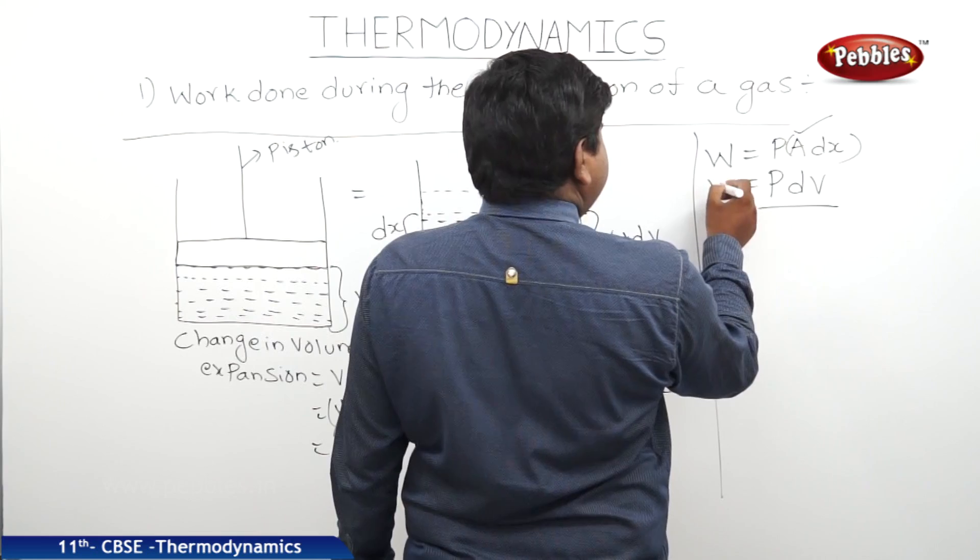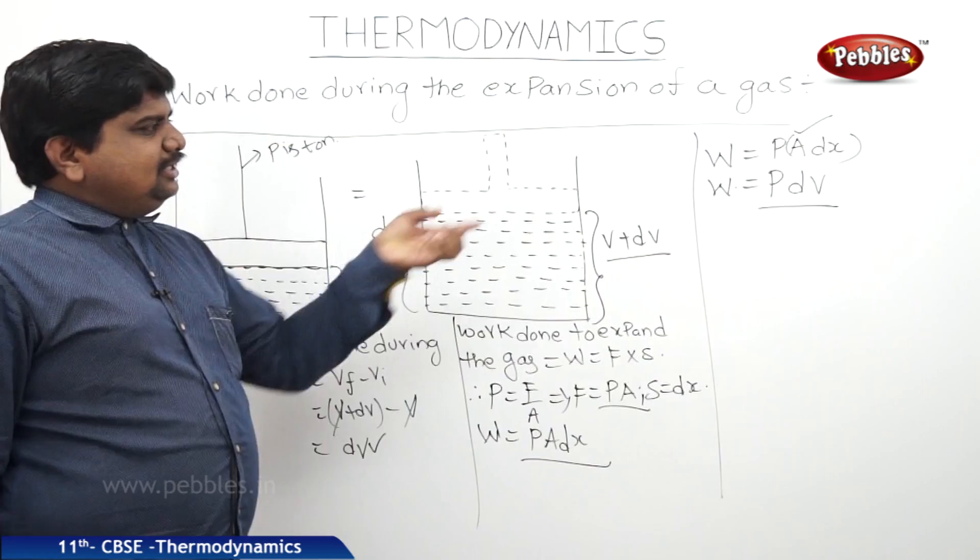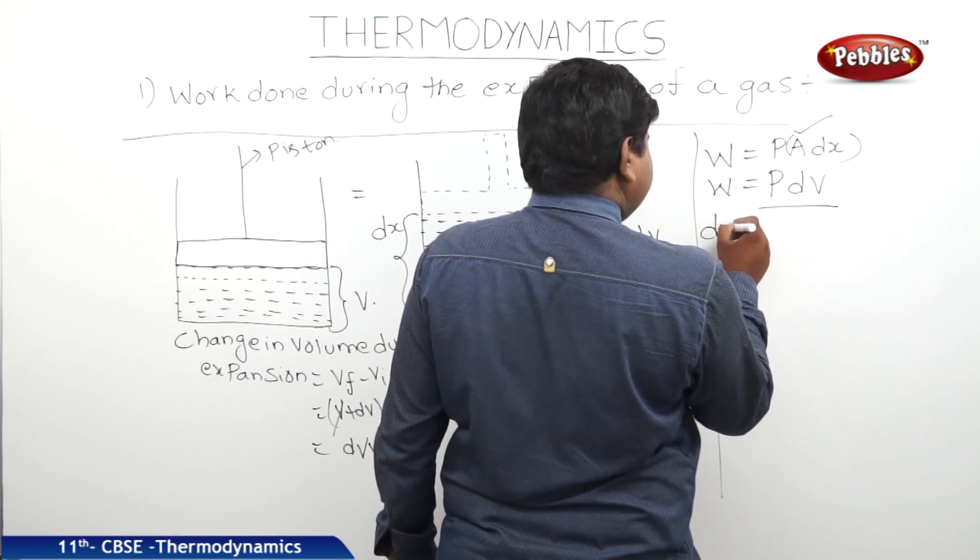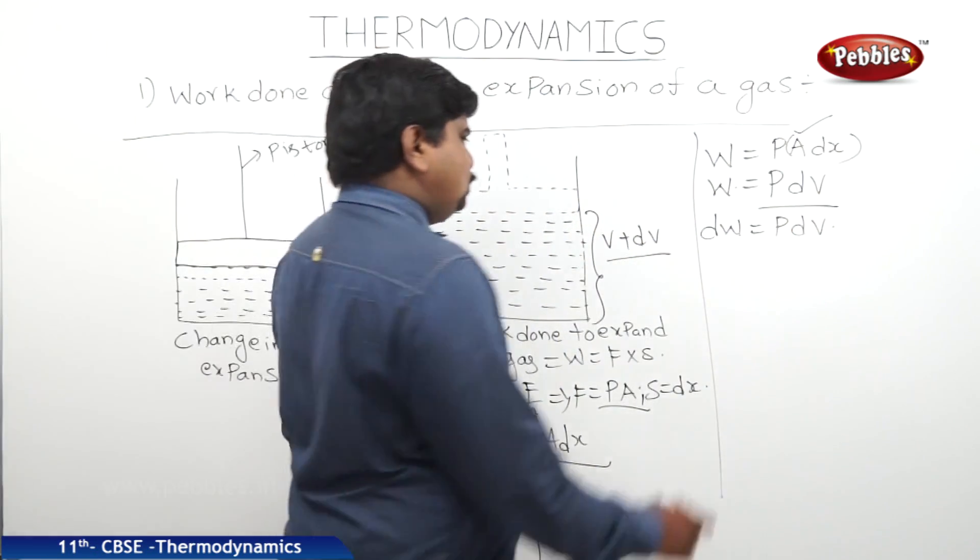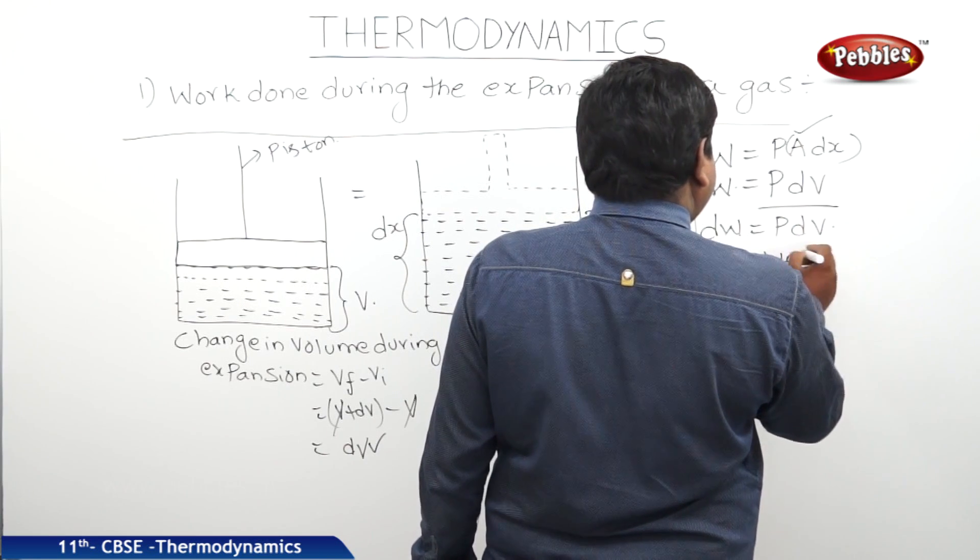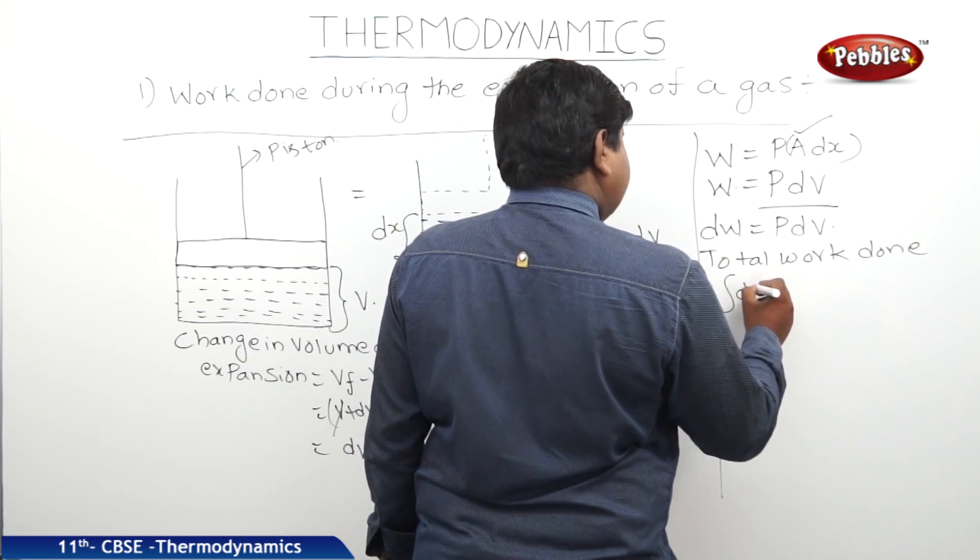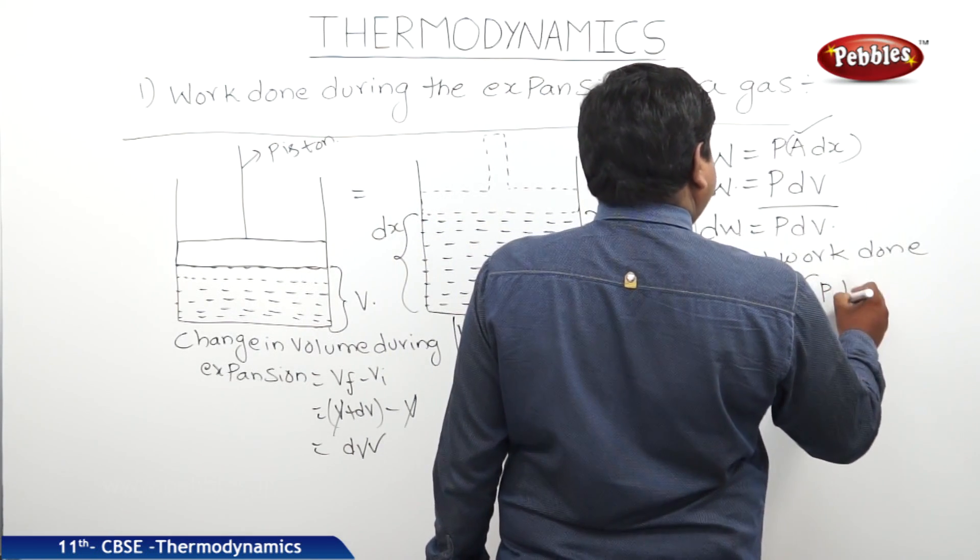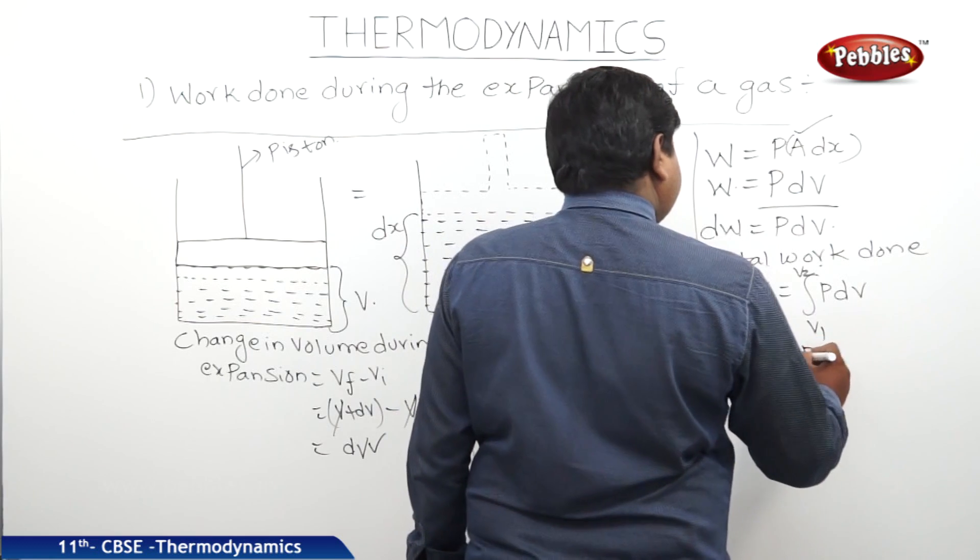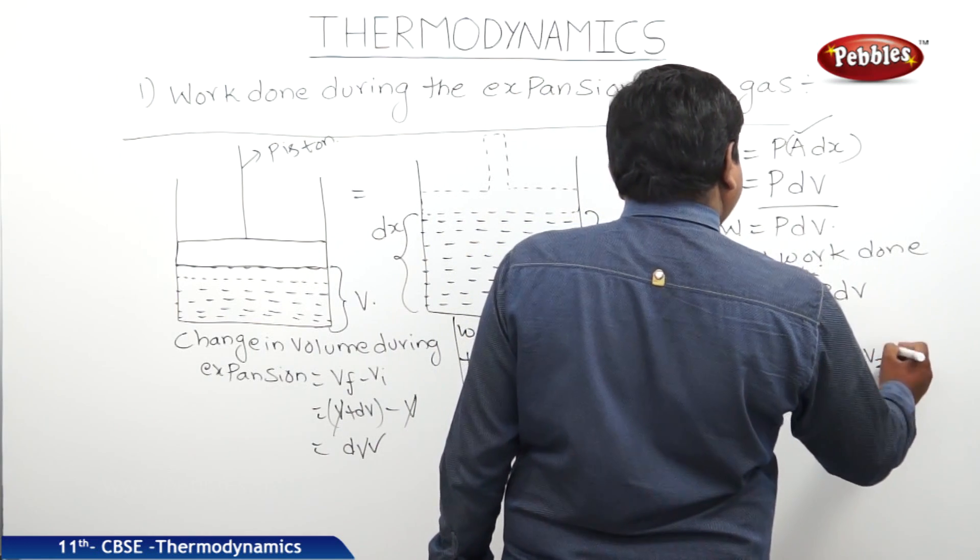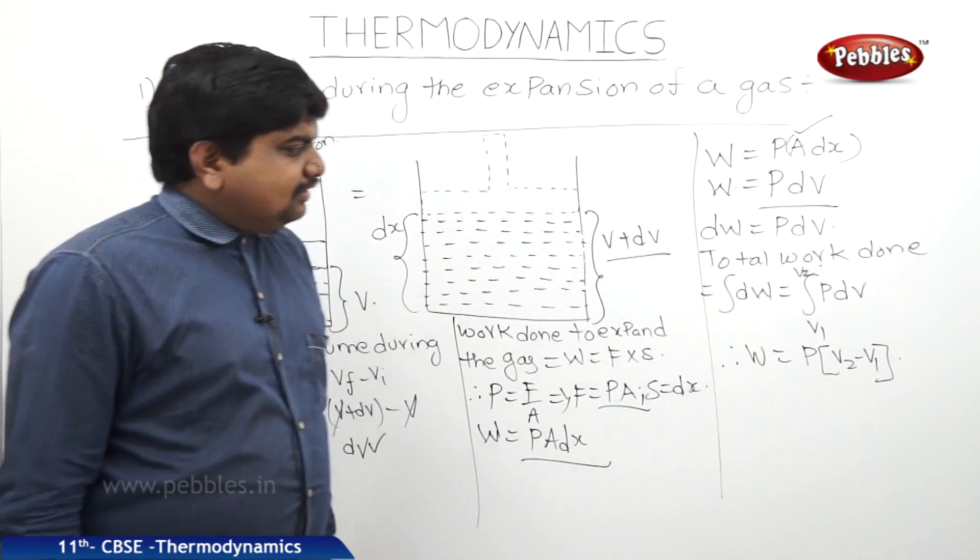Therefore, there is the work done W. If the work done is during small displacement, we can write W as dW equals P dV. Therefore, total work done equals integral dW equals integral P dV from the limits V1 to V2. Therefore, W equals P into V2 minus V1. Integral dV will become V between the limits V2 to V1.